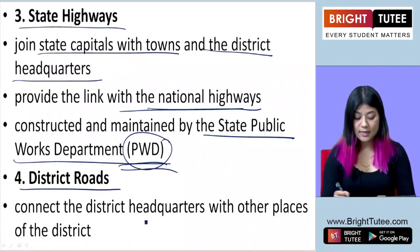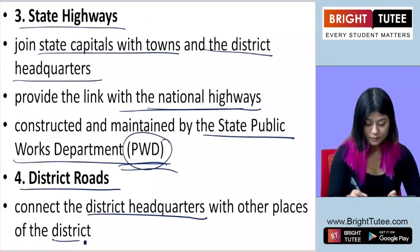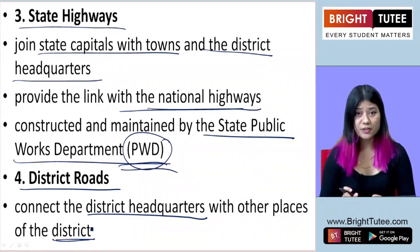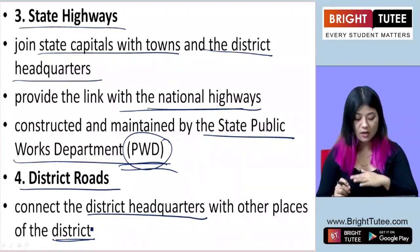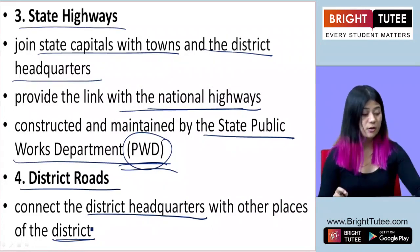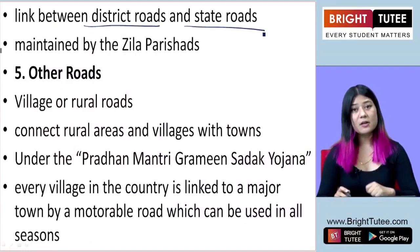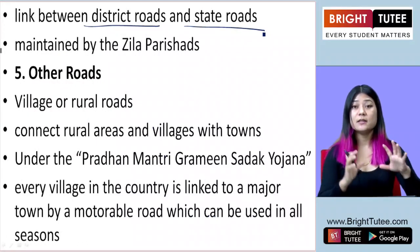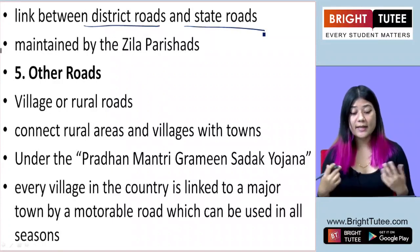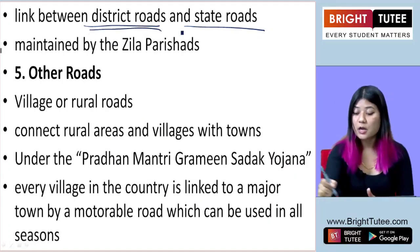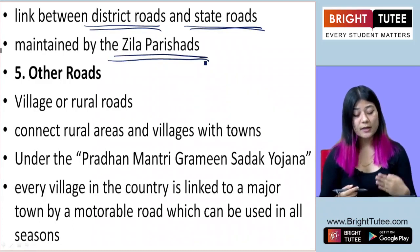The next type is district roads, which connect the district headquarters of a state with other places within the district. Each state has many districts, and the district roads connect the district headquarters with other places within that district. They act as a link between district roads and state roads, similar to how state highways connect to national highways. District roads are maintained by Zilla Parishads.